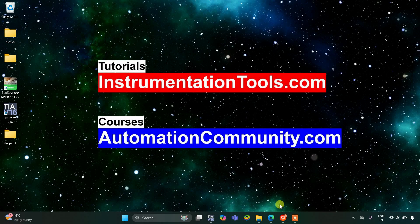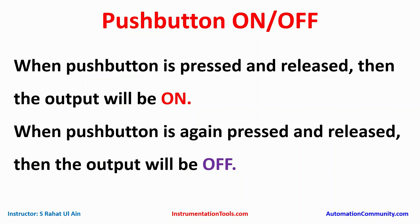Hello everyone, welcome to Automation Community. Today in this video we are going to discuss an example about a single push button ON and OFF. When the push button is pressed and released, the output will be ON, and when the push button is again pressed and released, the output will be OFF.